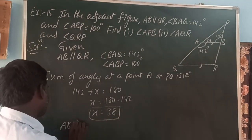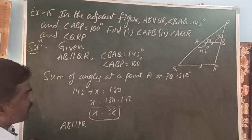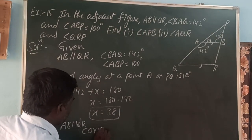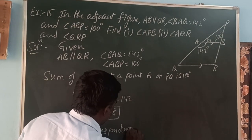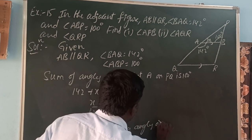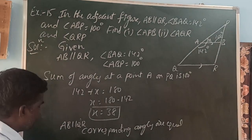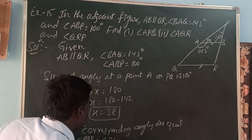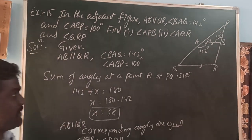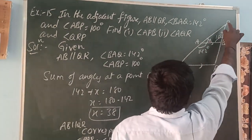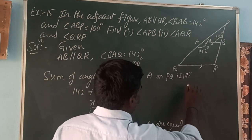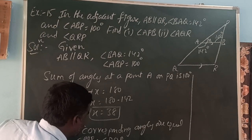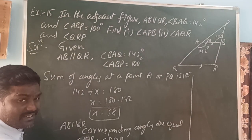AB is parallel to QR. When AB is parallel to QR, corresponding angles are equal. That is, angle PAB is equal to angle PQR, since corresponding angles are equal. Angle PAB is 38 degrees, so angle PQR is also 38 degrees.